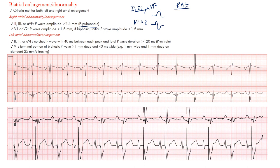We're looking for P pulmonale — the P wave should be at least 2.5 millimeters in amplitude. You can think of 'peaked' for P and also pulmonale, because this is often a result of problems in the lungs. COPD is a common example.